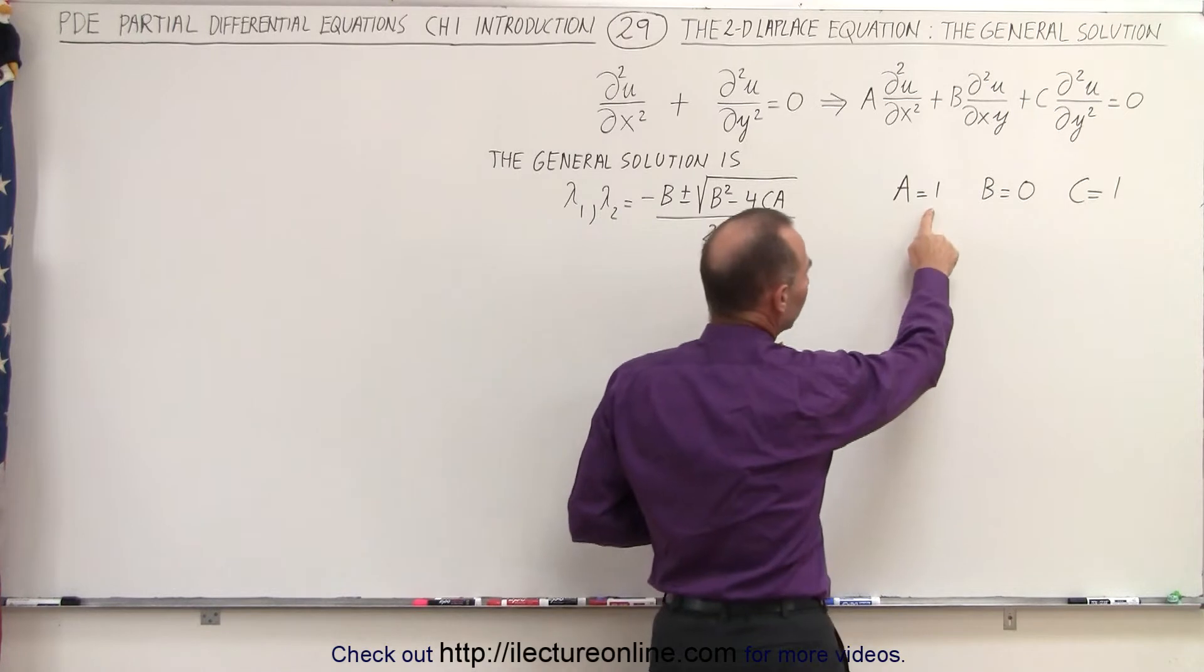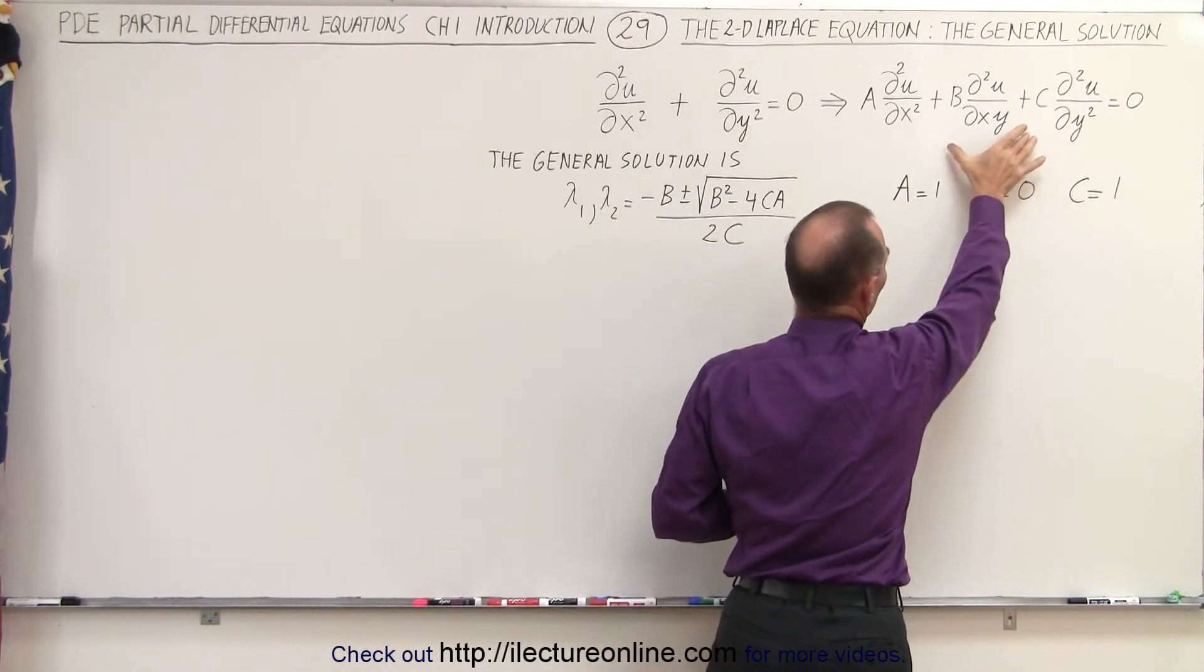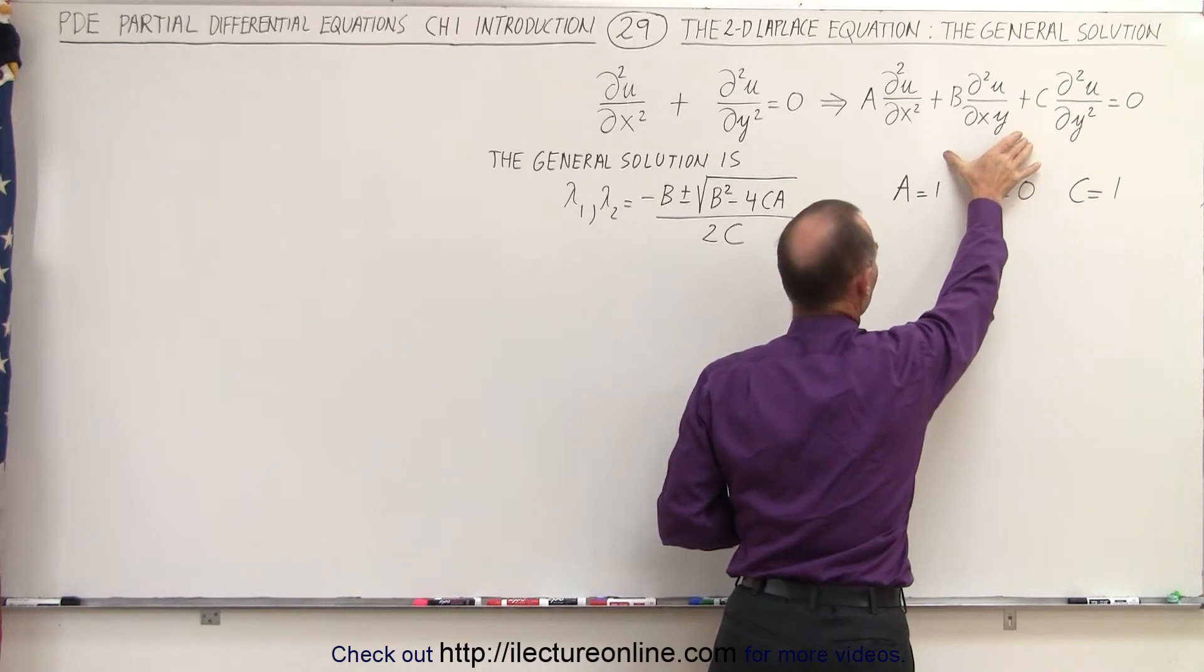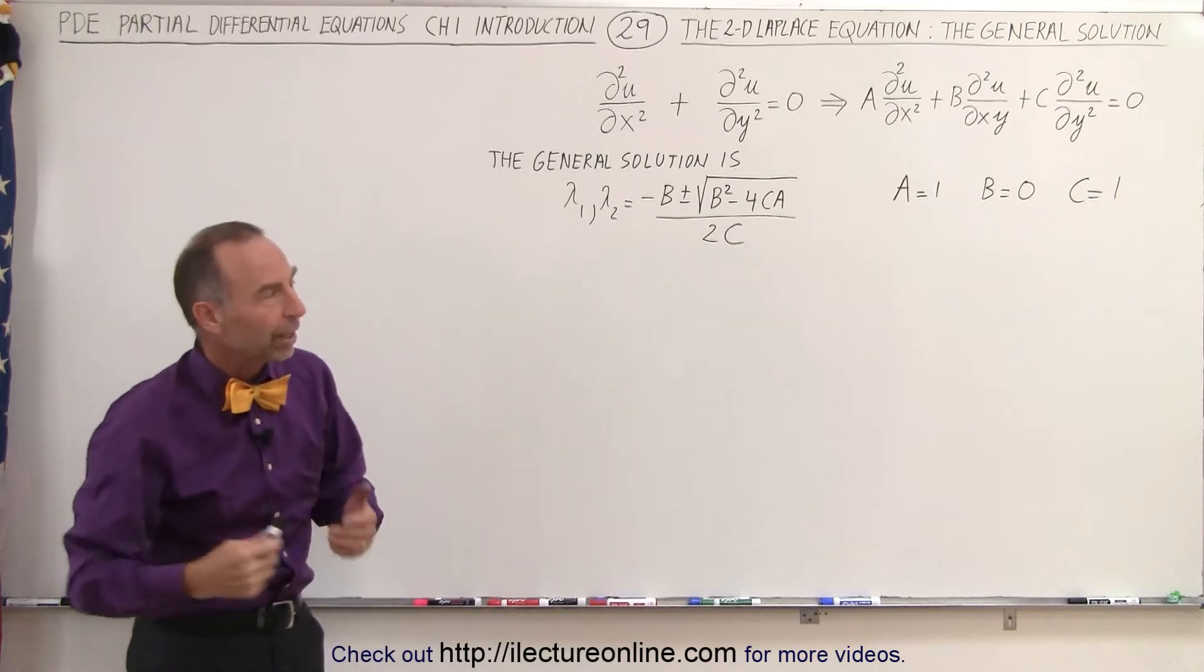If we set a equals to 1, b equals to 0, and c equals to 1, we can transform this reduced form of the second-order partial differential equation into what we see to be a Laplace equation.